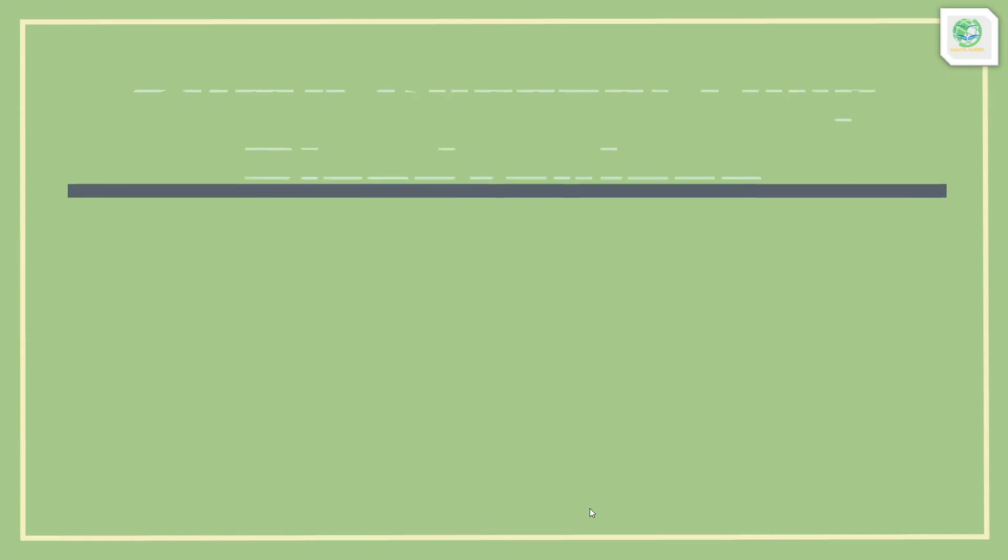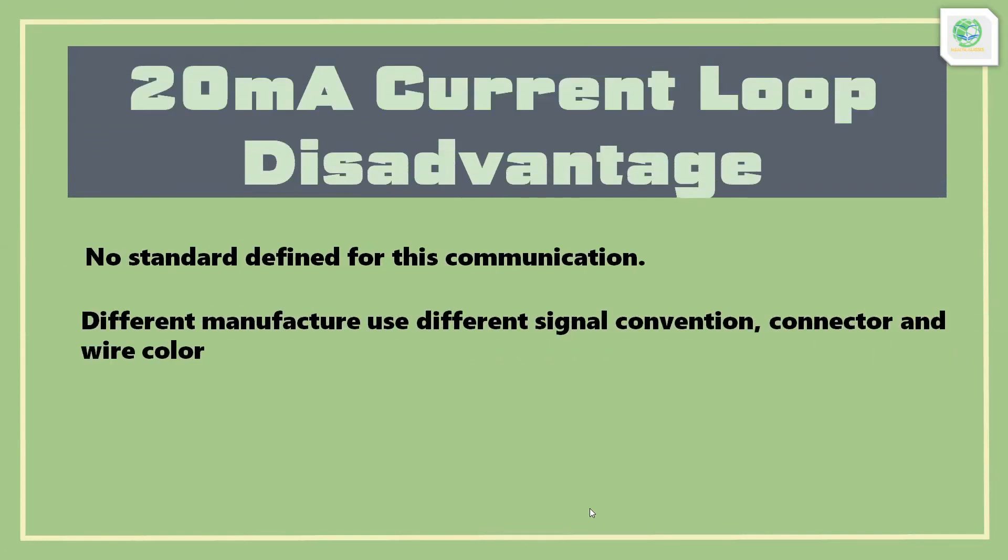The 20mA current loop does have some disadvantages. There is no standard defined for 20mA current loop, so connector, wire colors, and signal convention are not standardized.